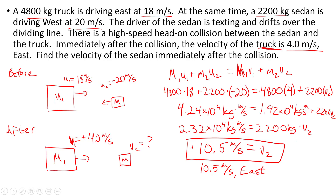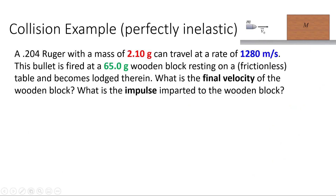That's just a standard collision. Next question — this is an example of a perfectly inelastic collision. A .204 caliber Ruger with a mass of 2.10 grams can travel at 1280 meters per second. The bullet is fired at a 65.0 gram wooden block resting on a frictionless table and becomes lodged therein. What is the final velocity of the wooden block, and what is the impulse imparted to it?